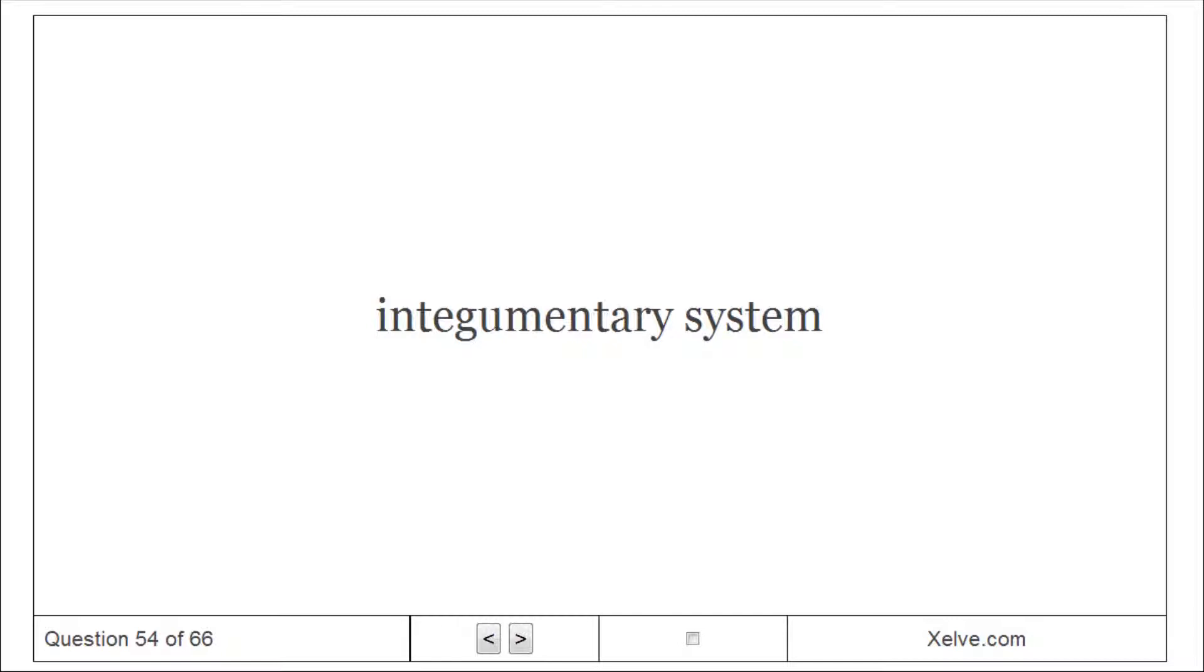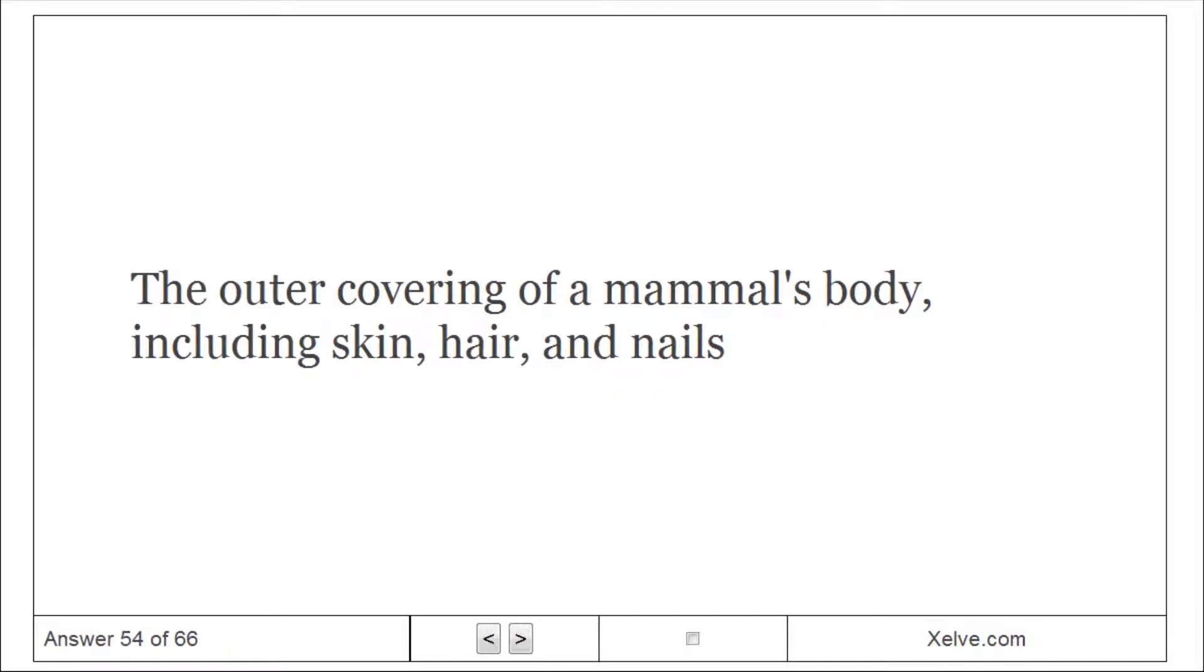Integumentary system: The outer covering of a mammal's body, including skin, hair, and nails.